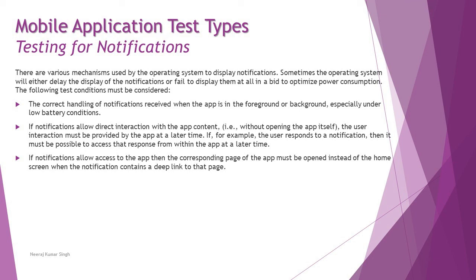The correct handling of notifications received when the app is in the foreground or the background must be tested, especially under low battery conditions. Low battery generally triggers power saving mode, which has an option that avoids unwanted notifications from being displayed. As long as you visit that app you can see updates, but notifications may not be allowed — so we want to see if the app behaves appropriately under these software conditions.